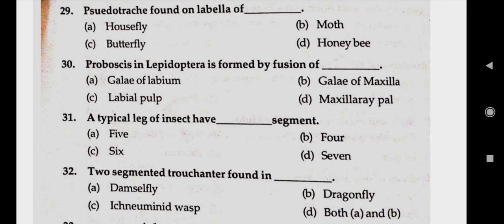Question number thirty-one: a typical leg of insect has dash segments. Answer A, five. Question number thirty-two: two-segmented trochanter found in. Answer D, both A and B — damselfly and dragonfly.